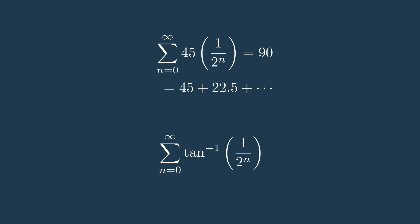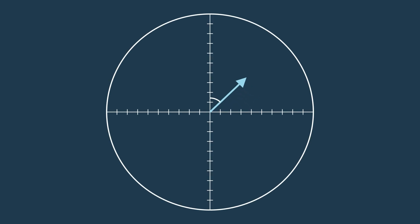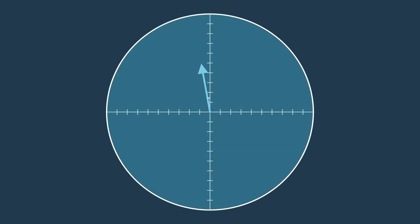Remember that the reason that that original series worked was because first of all, it converged to a finite number, and second of all, it covered at least 90 degrees of the unit circle in both directions. If we rotate our vector starting on the x-axis by this new series of inverse tangent angles, you'll see that the value is greater than 90 degrees, meaning we can cover the entire unit circle once again. But how do we know that this series actually converges to a finite value?